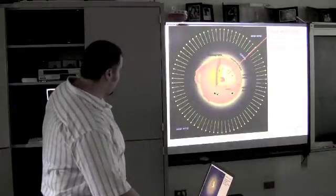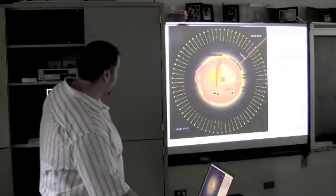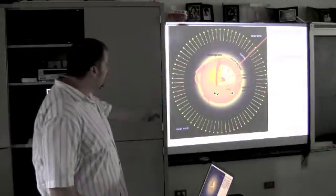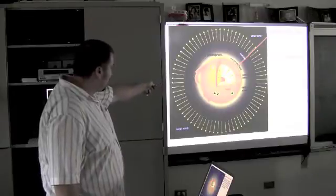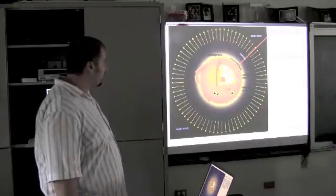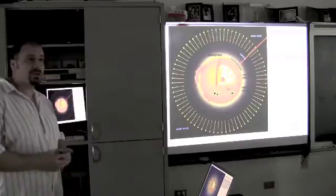So we have this radiation zone, as I said, where light is carried by the photons. And then we reach this convective envelope, the convection zone. And that's what makes the Sun an interesting star.